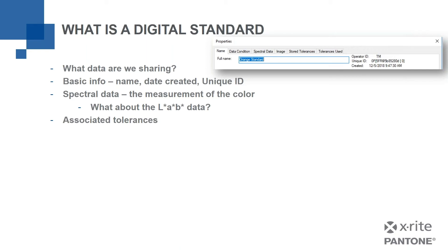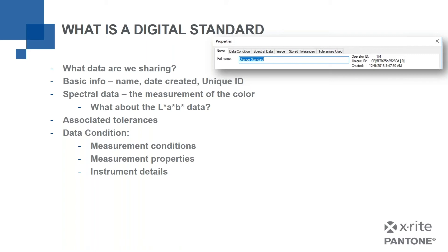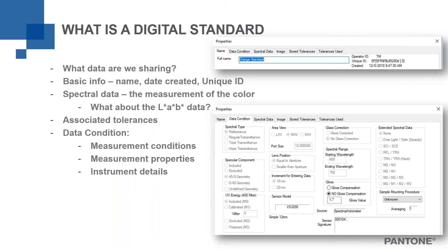A digital standard also includes associated tolerances to determine pass/fail, the condition of the data, measurement conditions and properties, and instrument details. Here's a screen grab from our software showing the kind of data condition information we can gather: is it reflectance or transmittance data, am I measuring with specular component included or excluded, using 45-0 geometry, what aperture size, and any UV filtering. All of those things impact the measurement, so a digital standard contains all of that information.